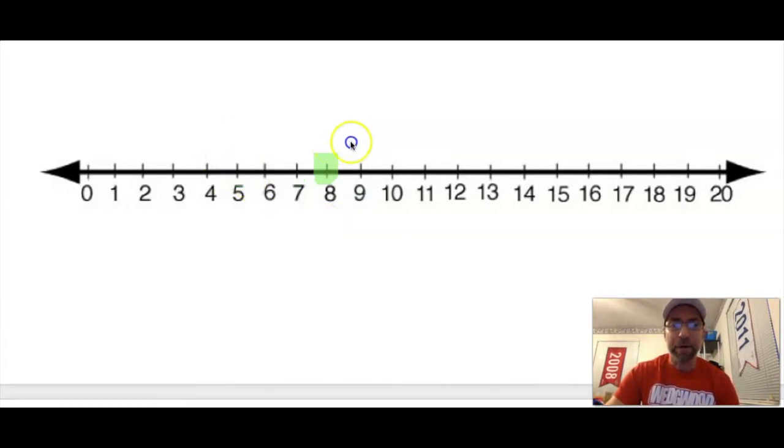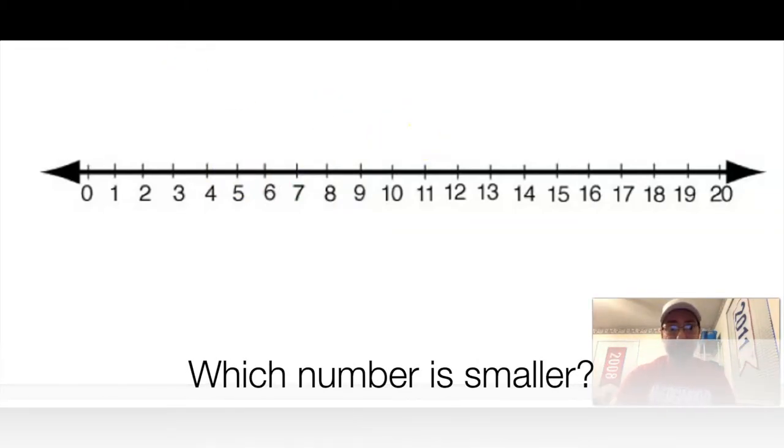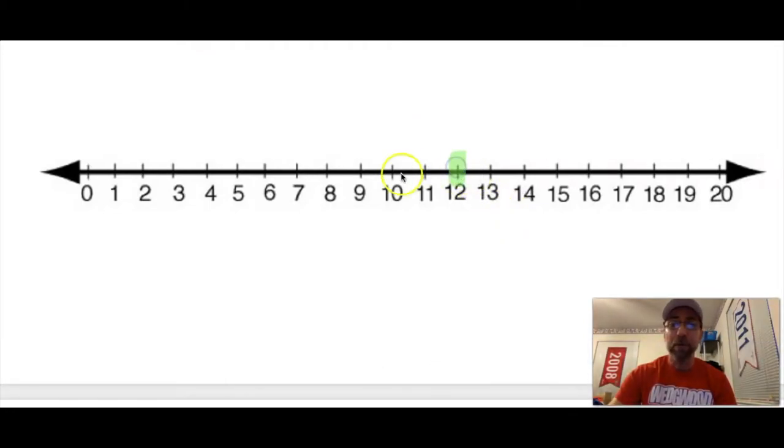But I can also compare numbers a different way. Now, I can ask which number is smaller. Is the number 12 or the number 10 smaller? Now smaller means it's going to be closer to zero. It's the first number I would say if I'm counting. Let's check. Zero, one, two, three, four, five, six, seven, eight, nine, ten, 11, 12. The smaller number is 10. That means the bigger number would be 12.